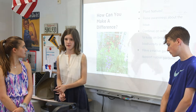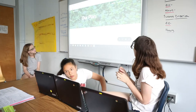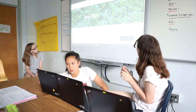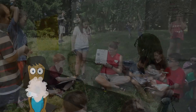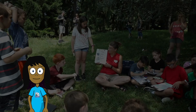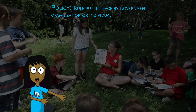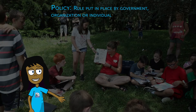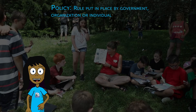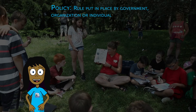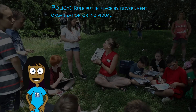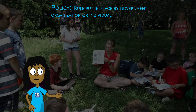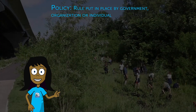Take time to define the meaning of policies, practices, and stakeholders before beginning research. A policy is a rule put in place by the government, an organization, or individual. For example, the speed limit is 35 miles per hour on Main Street. You can think of a policy as how things are supposed to be done.